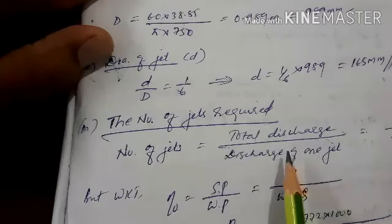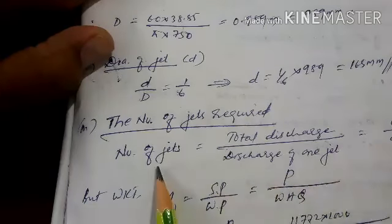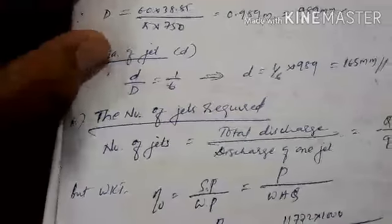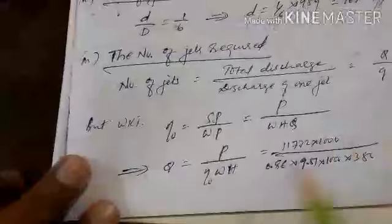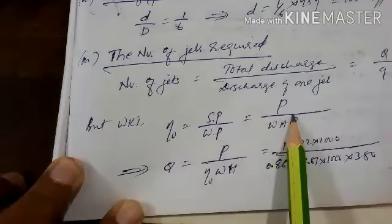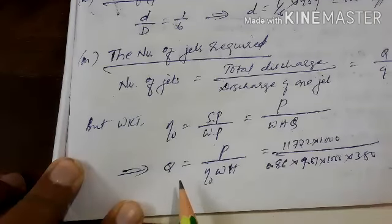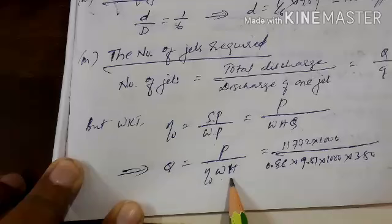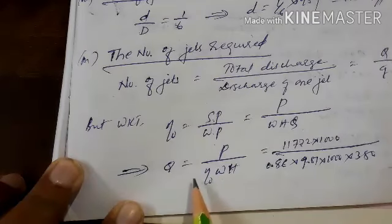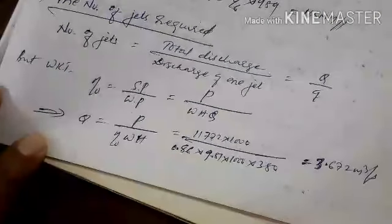The number of jets formula is total discharge Q divided by discharge of one jet q. We know the overall efficiency of the turbine: shaft power divided by water power. Shaft power is given; water power is γ·Q·H. From this, Q = P / (η_o × W × H). Total discharge is obtained as 3.672 cubic meter per second.